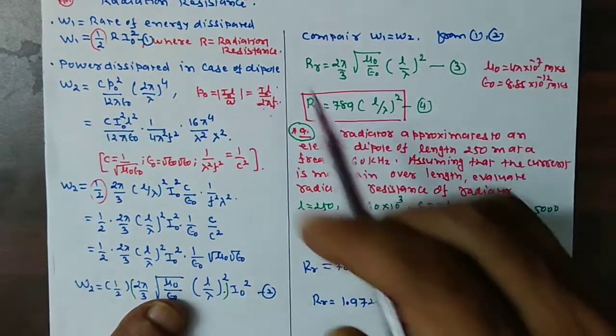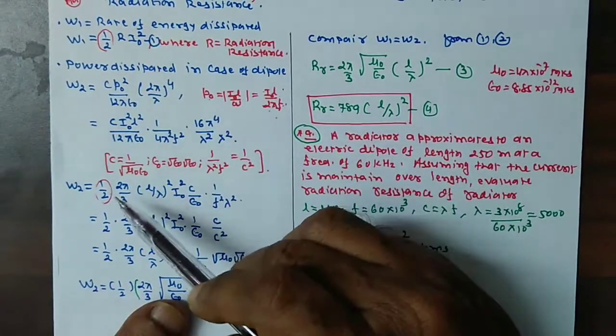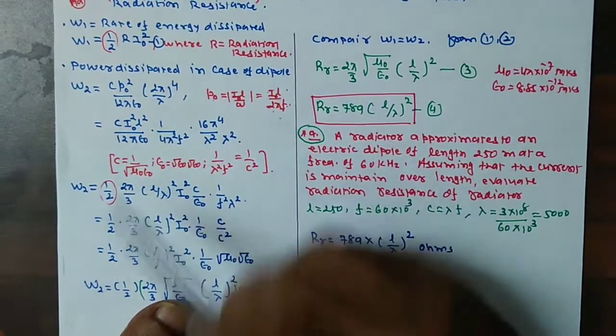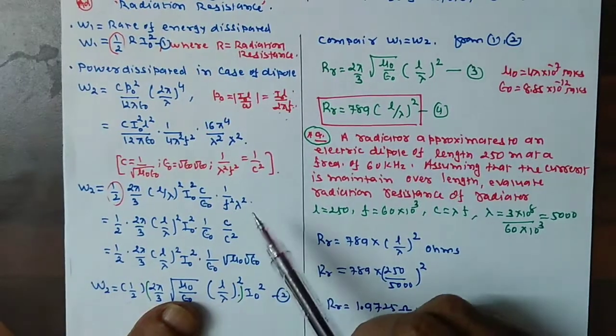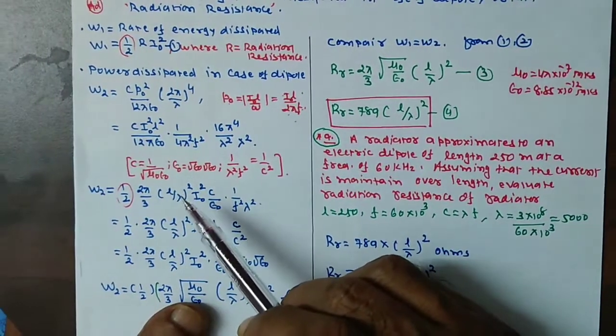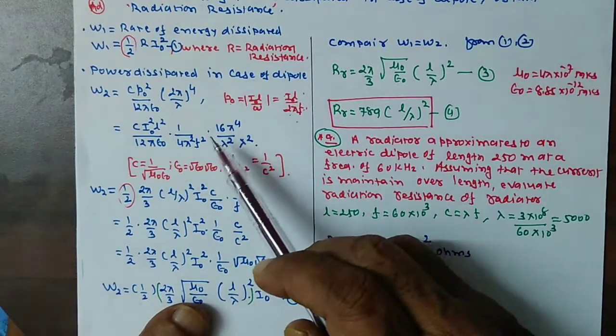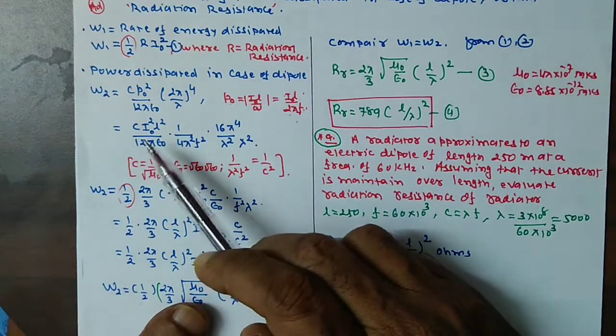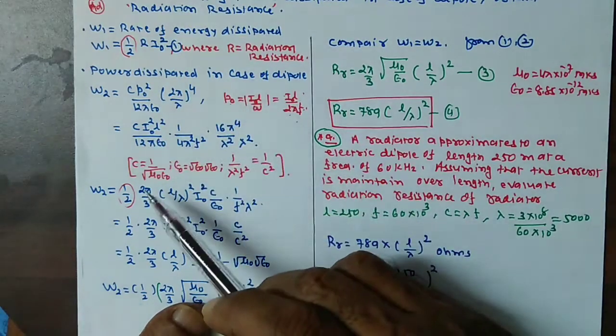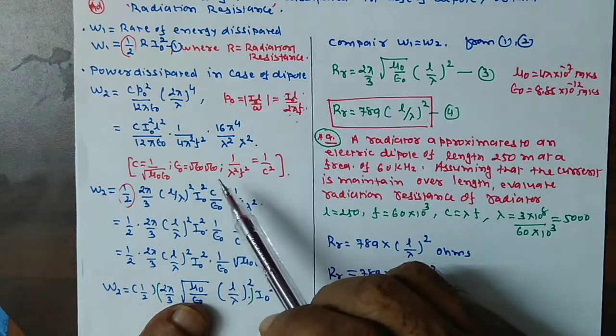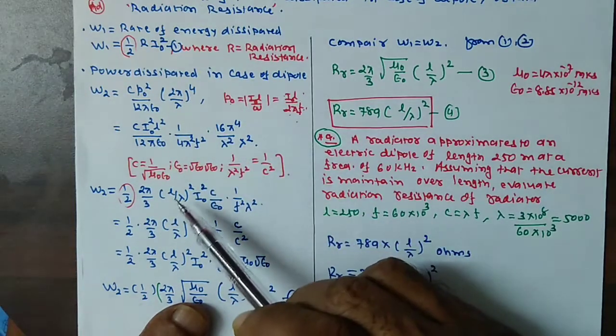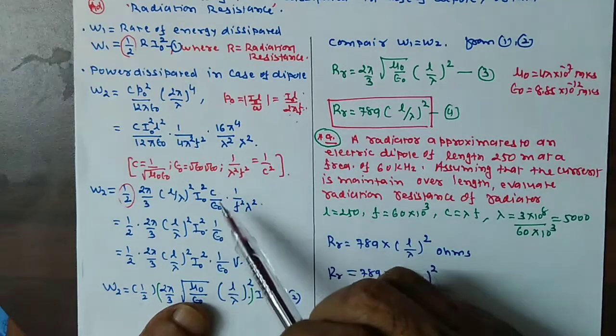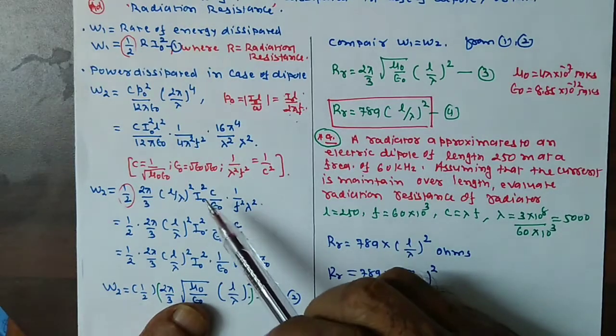So we have here one half. Here we have multiplied same thing. This value is 16, 4, 4, 3, 12 this way. 2 by 3, L square, 1 λ square we have here.